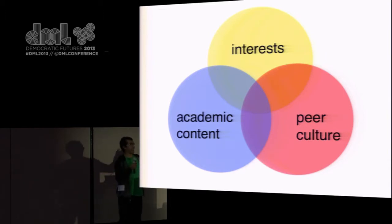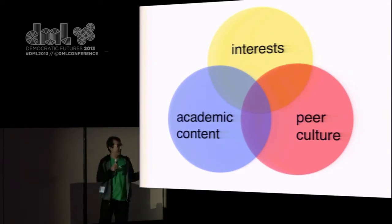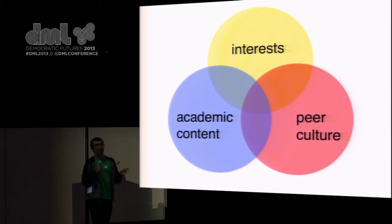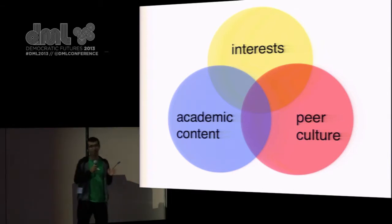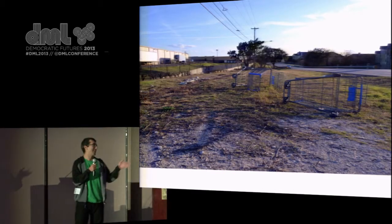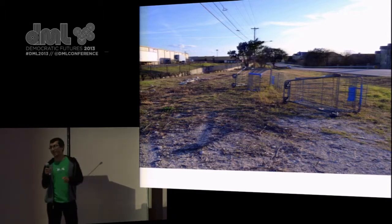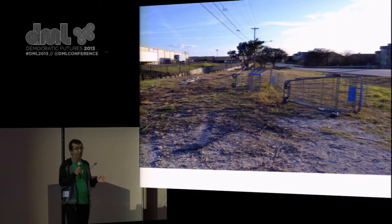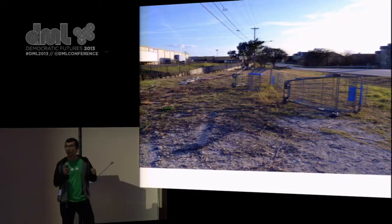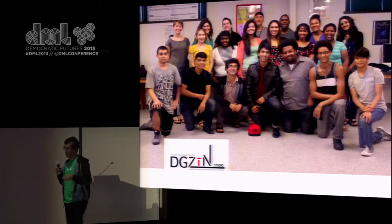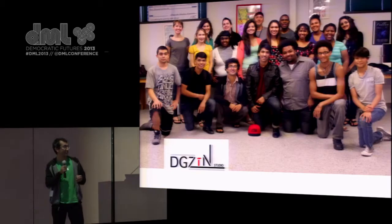I guess you already know about the connected learning framework. We seek to integrate three spheres of learning that are usually separated: interests, academic content, and peer culture. When students are able to link their practices and identities across these spheres, meaningful learning happens. Connected learning has the potential to transform educational systems and also to provide enrichment opportunities to more youth, especially for youth from marginalized communities.